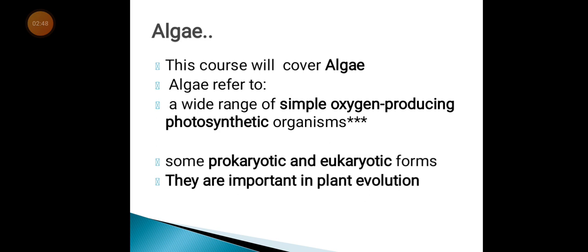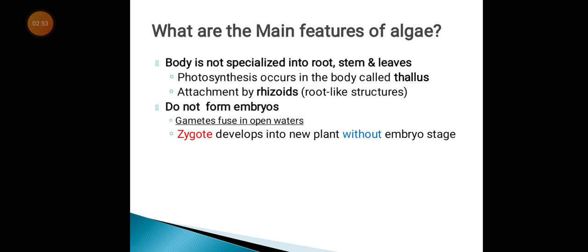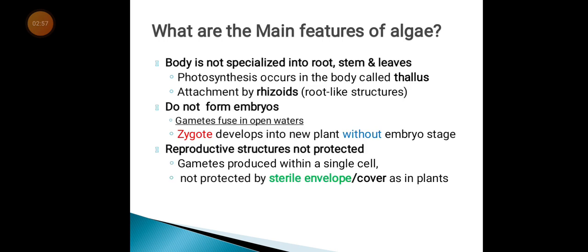What are the main features of algae? Their body is not specialized into root, stem, or leaves. Algae is a form of plant-like organism, but it is not specialized. The moment it begins to specialize into root, stem, and leaves, it becomes a plant. In algae, photosynthesis occurs in the body called the thallus, and attachment is by rhizoids — root-like structures.